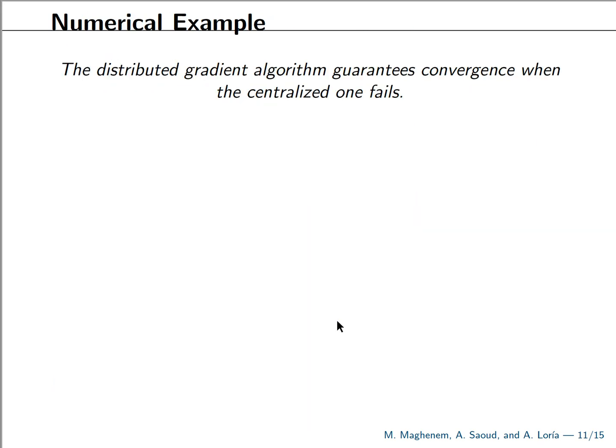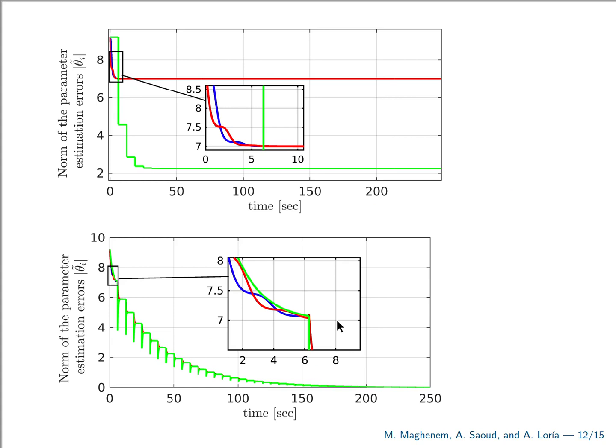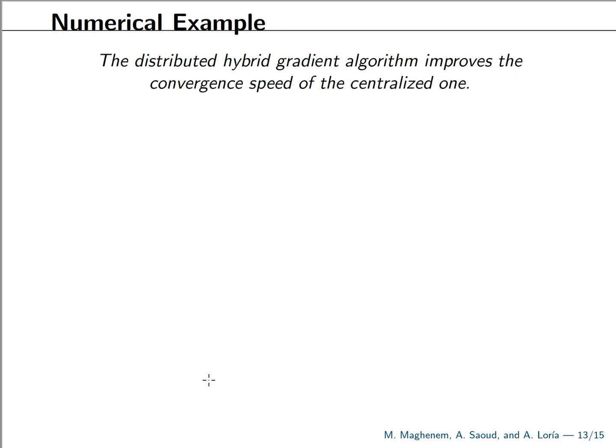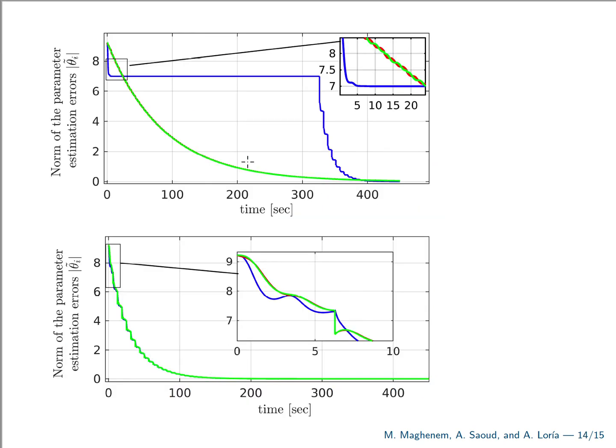So now to conclude, let me show some simulations. In the first set of simulations, we have a network of agents. None of them is hybrid persistently exciting. So none of them is able to estimate the parameters on its own. However, if we interconnect them according to an all-to-all graph, we can see that they all converge. Another situation is when we have a network of linear regression model, each of them is hybrid PE. So there is no problem here. Each of them can independently estimate and reconstruct the parameter. However, if we interconnect them, we improve the convergence properties.